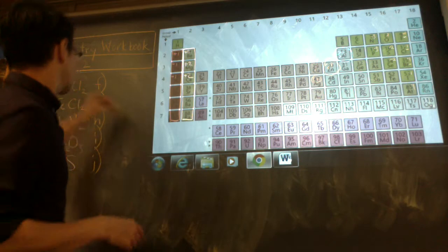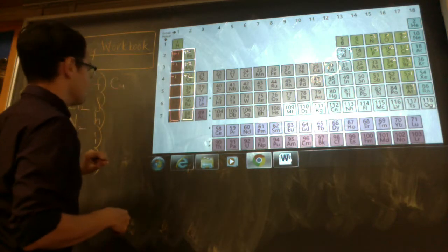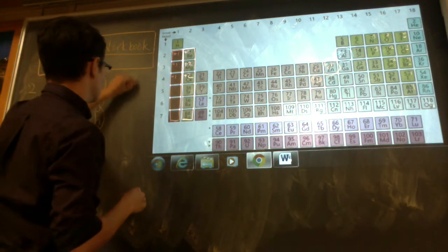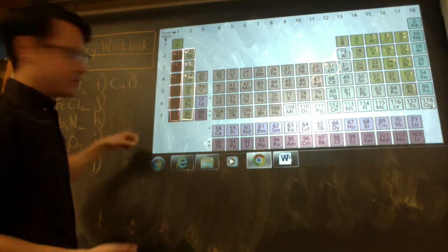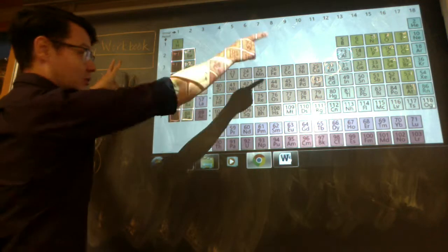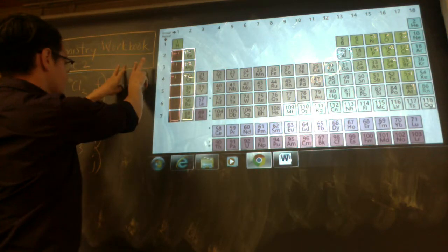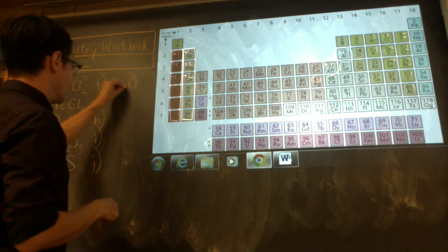Copper(II) oxide. Cu for copper, O for oxygen. It's copper 2+ and oxygen is always 2- as well. So that's like 1 and 1, so it's just CuO.